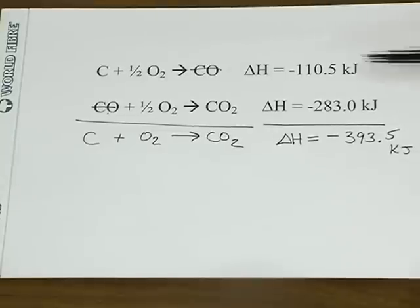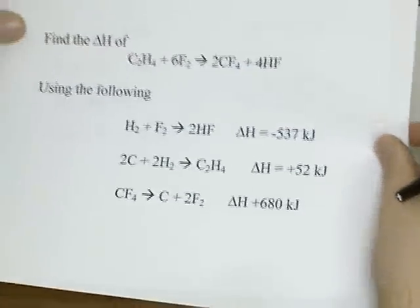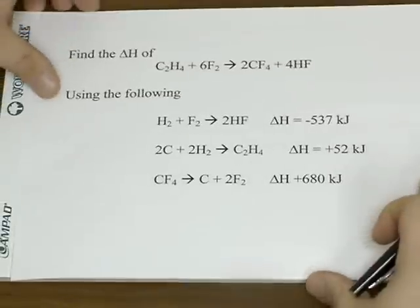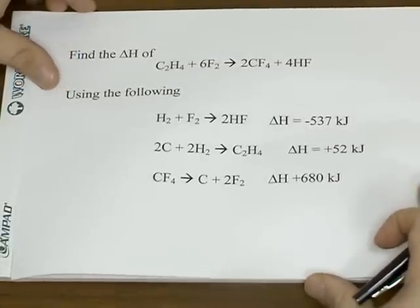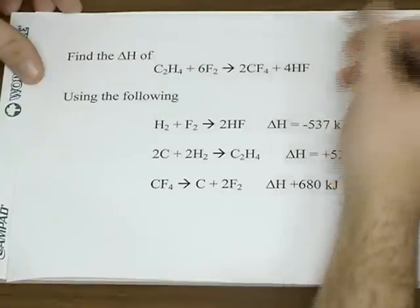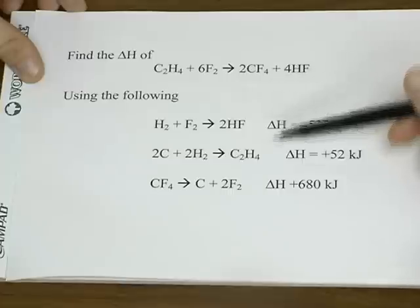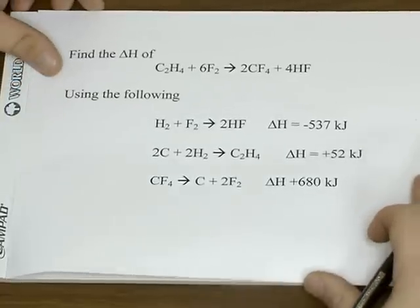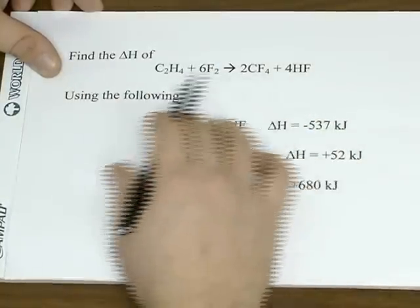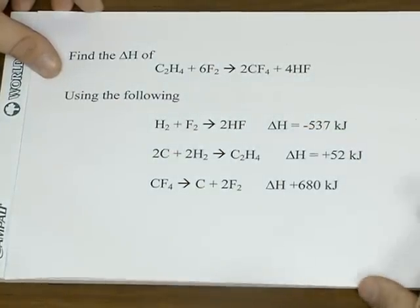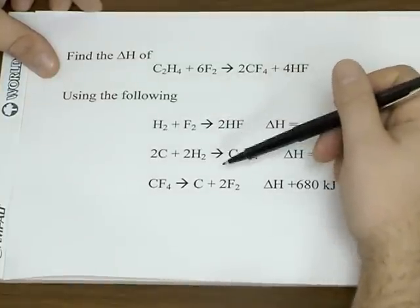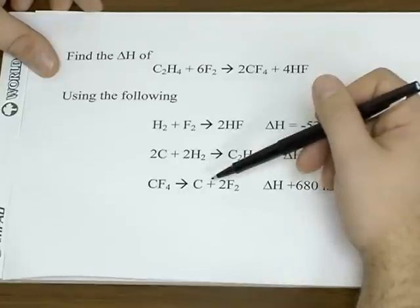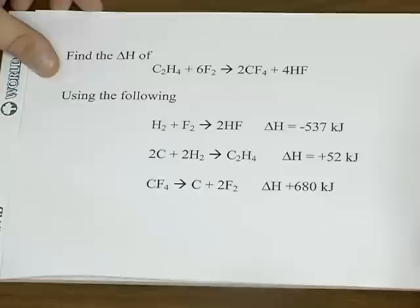A lot of times though when you're given equations, sometimes you're not given them where you automatically can add them together. For example, a typical Hess's Law problem might be set up like this, where you're trying to find the enthalpy change of this equation and you're given these three equations here. Now if you just try to add them up like we did a minute ago, they're not going to come anywhere close to the one they're asking for. So a lot of times you have to modify the equations so they will add properly. But when you modify the equation, you've got to modify the enthalpy change as well.